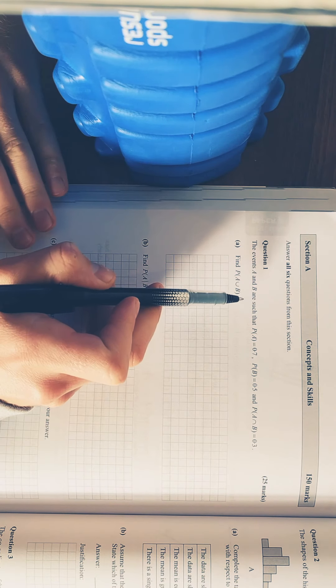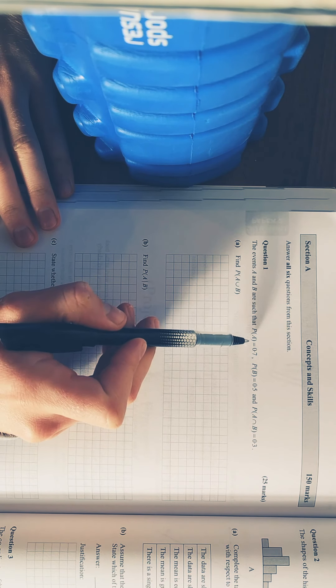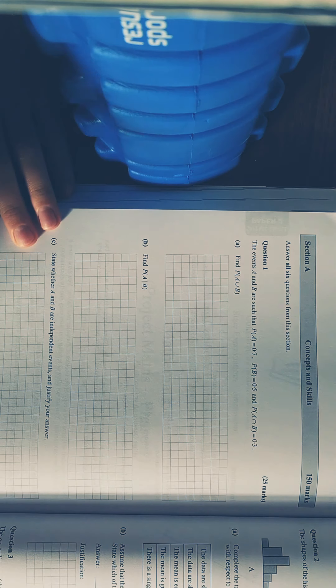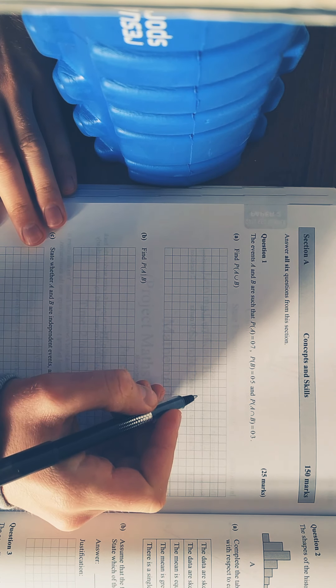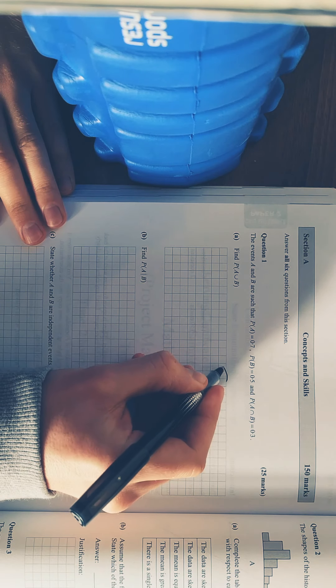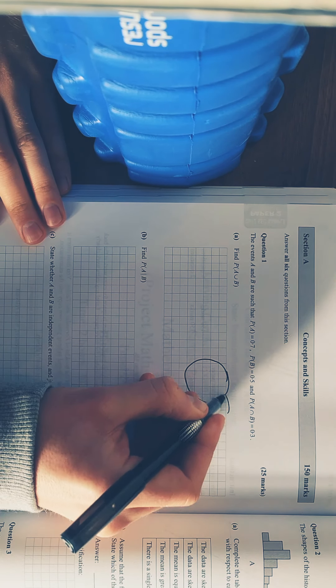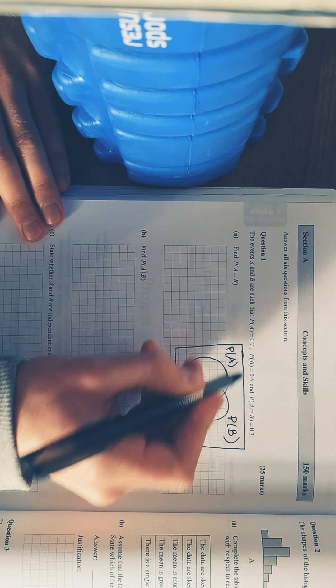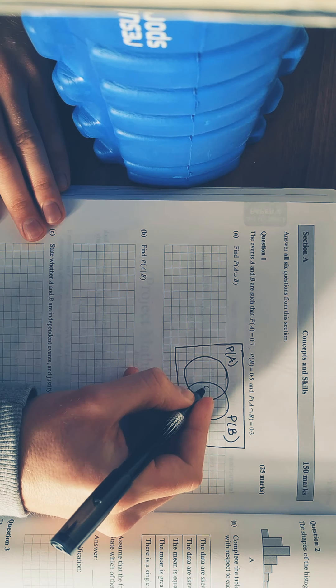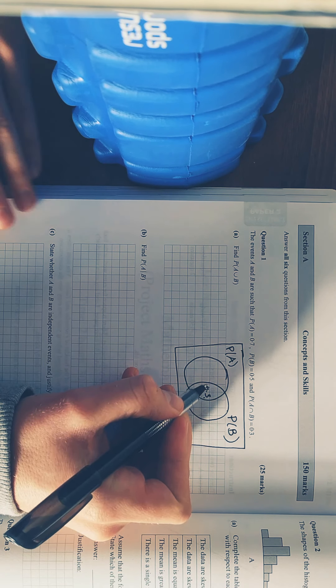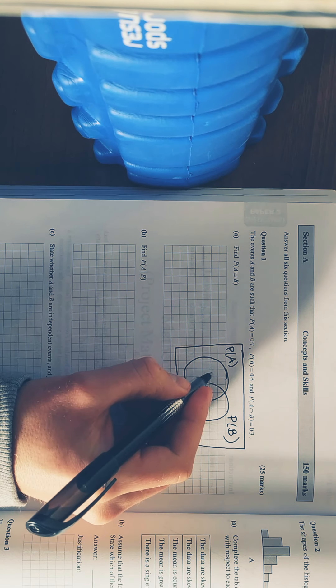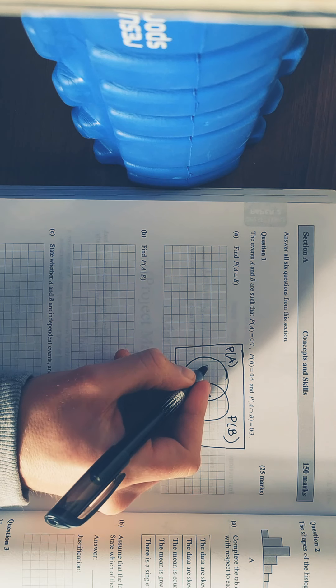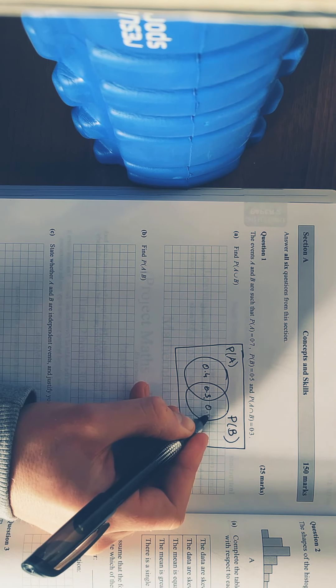So here, two events and the probability of each event is 0.7, 0.5, and the intersection of B is 0.3. Find A union B. The easiest way to do this is just sketch out your Venn diagram. That's your probability of A, your probability of B. When you're filling your Venn diagram, where do you always start? You always start in the middle, or the intersection. 0.3, so 0.3's in there. Total in A is 0.7, so it must be 0.4.